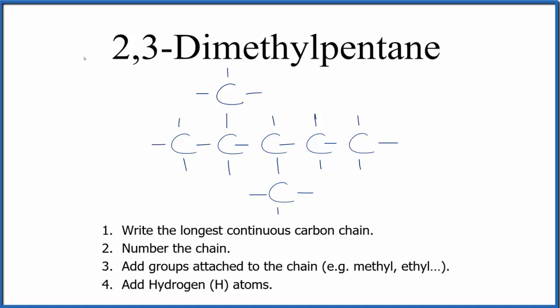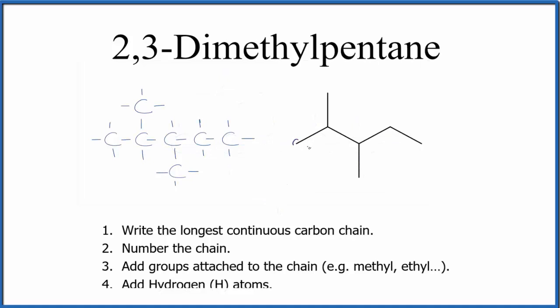We could also draw it this way. So we have our five carbons. They're not showing, but they're right here. And then from the second carbon, we have our methyl. There's our two methyl. And then here's our three methyl. There'd be hydrogens around each carbon.